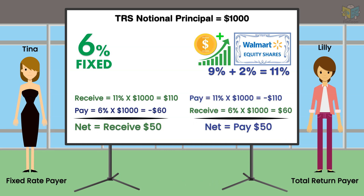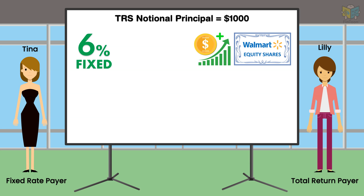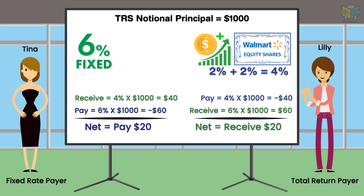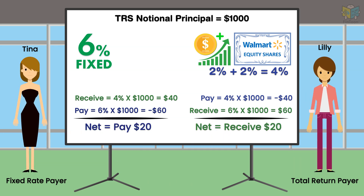Here is the payoff from Lily's perspective. If the total return generated by Walmart is only 4%, then Tina has to receive $40 from Lily and pay $60 to her. This payment can be netted, and Tina will pay $20 to Lily.